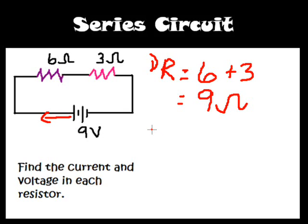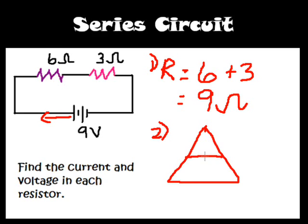That leads us into step 2. In step 2 we're going to use Ohm's law. And I like to use the math triangle because the math triangle makes it easy to see the algebra. So here is Ohm's law expressed in the math triangle: V equals I times R.